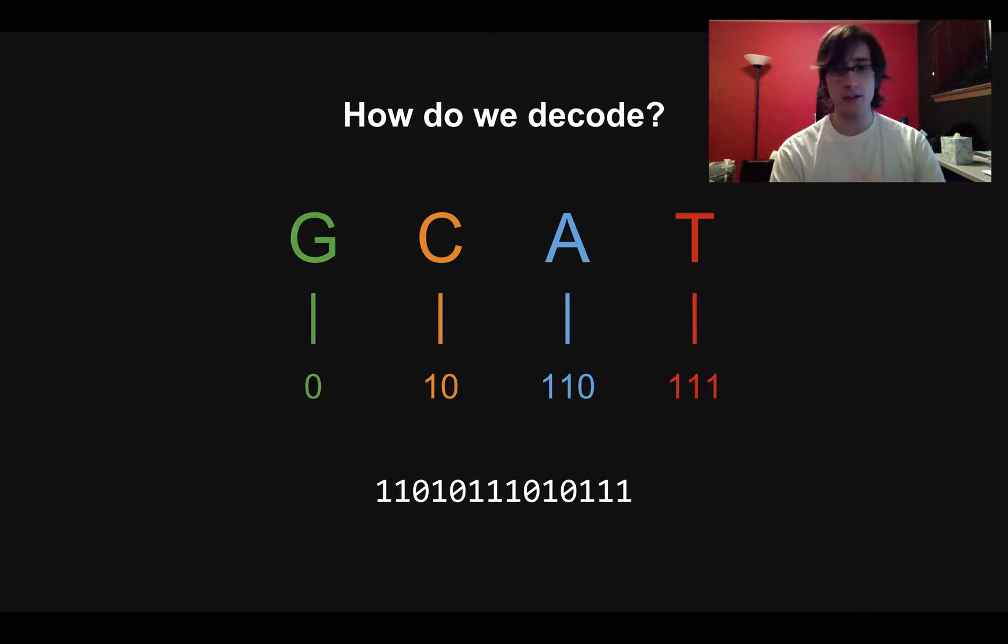So let's say we're given this string of binary that I have at the bottom of the screen here. And we're told it was encoded as follows. If the encoder saw a G in the DNA sequence they were encoding, they sent a zero. If they saw a C, they sent a one zero. If they saw an A, they sent a one one zero, et cetera. And these are the bits we've now received from them. And we want to just figure out what were the letters they had been looking at before that caused them to generate the string of bits.